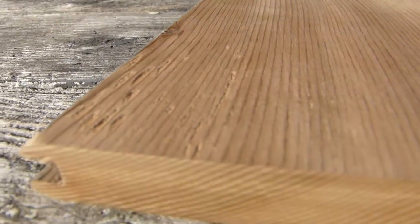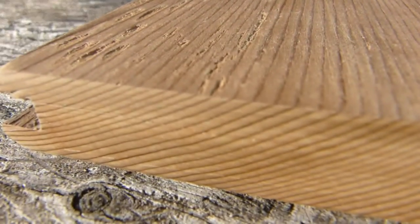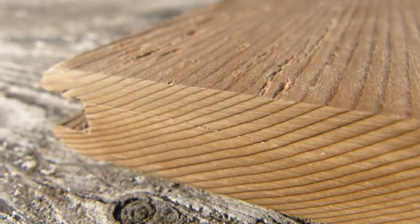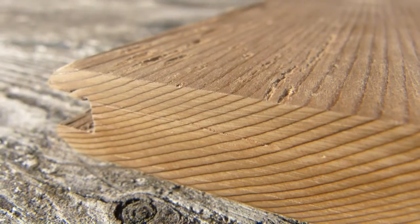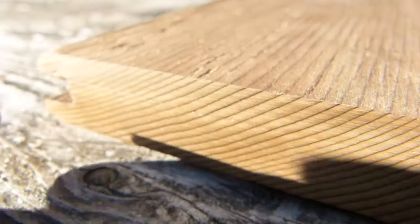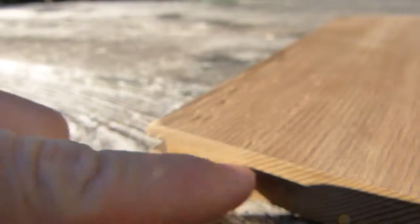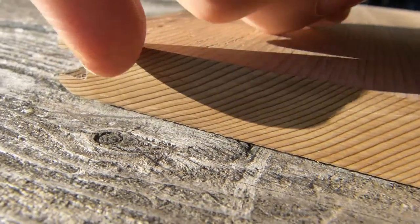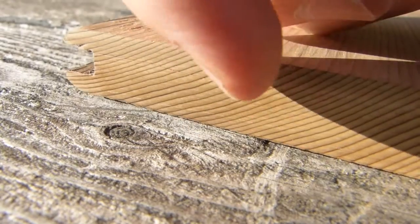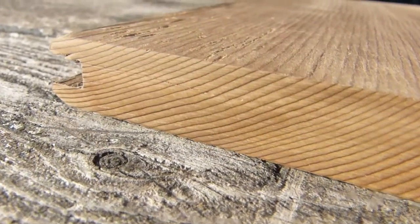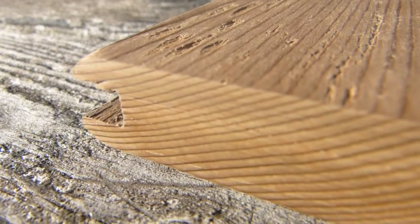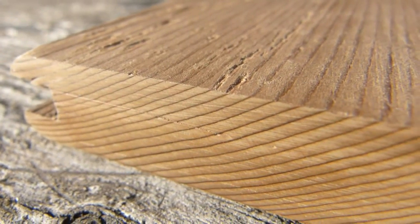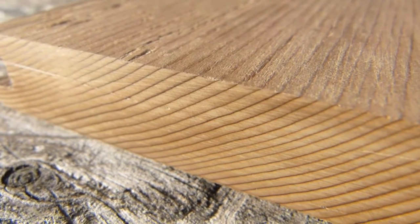The same lines can be found at the end grain here. And you can also see other than the few sanding scratches or just scratches that run this way, you can also see the rays running somewhat perpendicular to the growth rings. There. That's about as close as I can get with the camera.